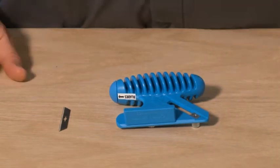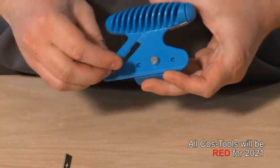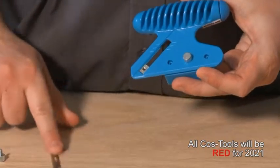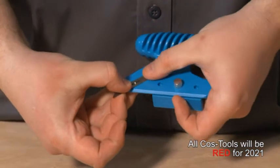To load a blade into the CosTool straight bevel cutter, first remove the blade holding knob, then align one blade sharp side down onto the blade holder and replace the knob.